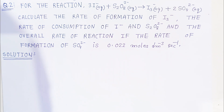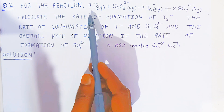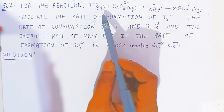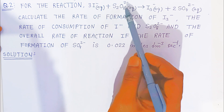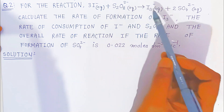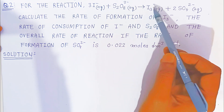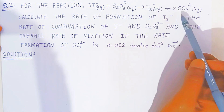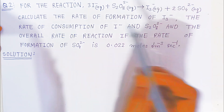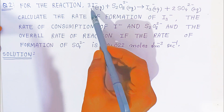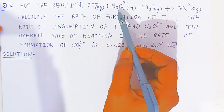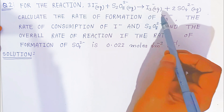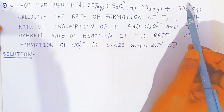In this question, it is given for the reaction where 3 moles of iodide (I⁻) aqueous react with 1 mole of persulfate (S₂O₈²⁻) aqueous, and it will form 1 mole of triiodide ion (I₃⁻) aqueous and 2 moles of sulfate (SO₄²⁻) aqueous.